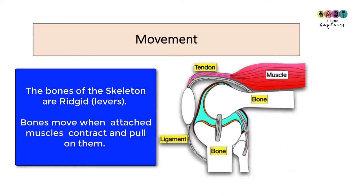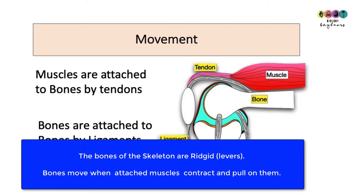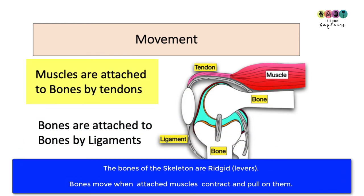The next function is movement. Bones can only move because they're acting as levers. Muscles are contracting — muscles are attached to the bones by tendons. When they contract they lift the bone upwards, and bones are connected to bones by ligaments. So it's a complicated system of levers and we move because of our skeletal muscles contracting.